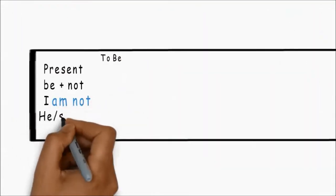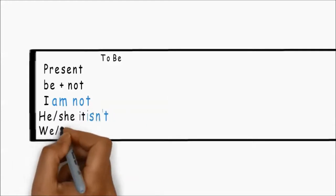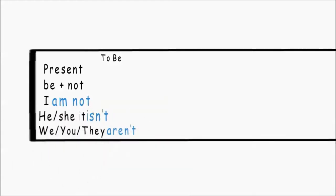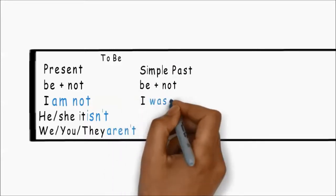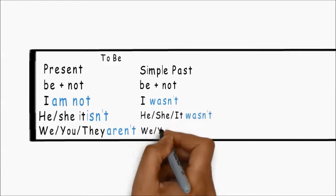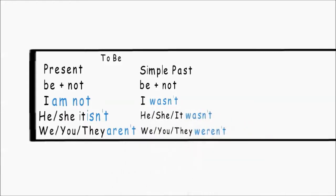To be, present. I am not. So these are the negatives. I am not. He, she, it, isn't. And you, we, they, aren't. Simple past plus not. I wasn't, he, she, it wasn't, and you, we, they weren't.